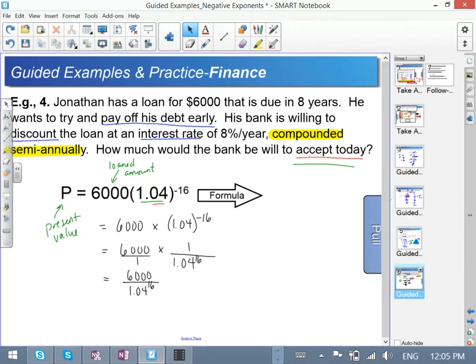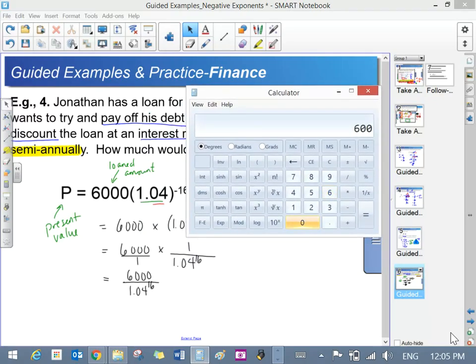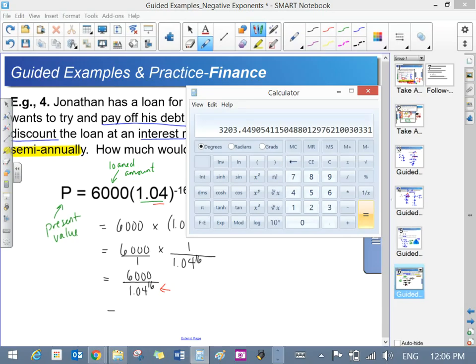Let's calculate and see what we come up with using your calculator. I'm going to take 6000 and divide that by—I'm going to open up some brackets because we need order of operations—1.04 to the power of 16. Close the bracket off. Once I close the bracket, that's the answer in the denominator. I'm going to hit equals again to make the division. I get 3203.45.